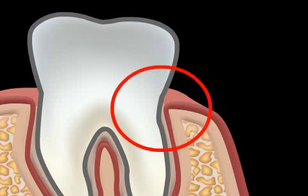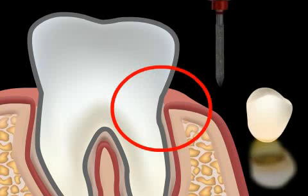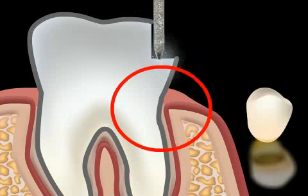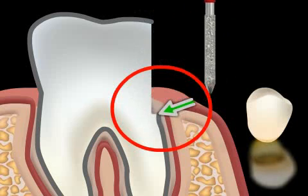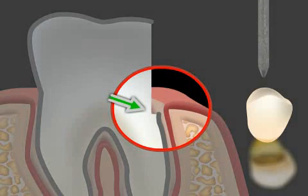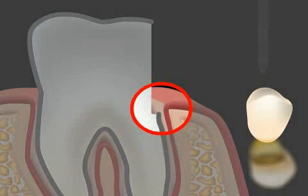When the dentist cuts the tooth for a crown, a preparation margin results. A preparation margin refers to the point where the uncut tooth transitions into the cut tooth. It is imperative that this preparation margin is apparent in the impression.